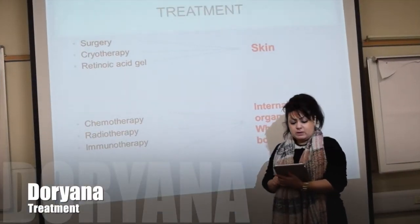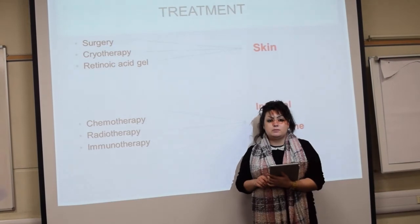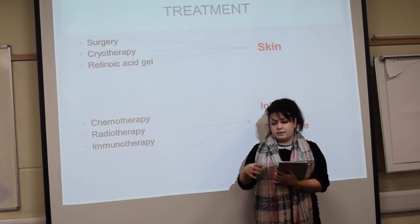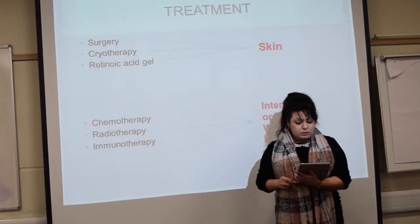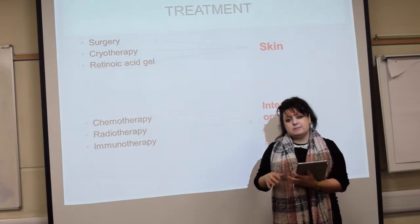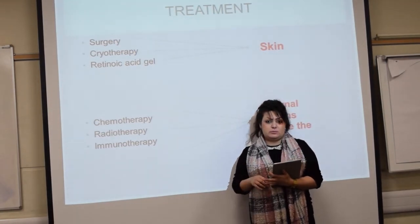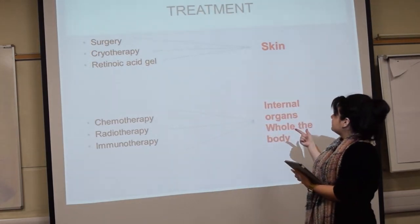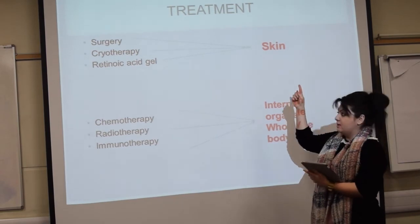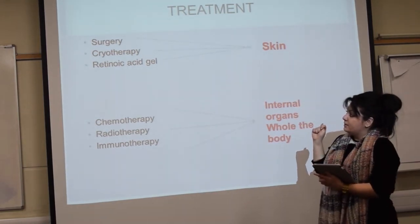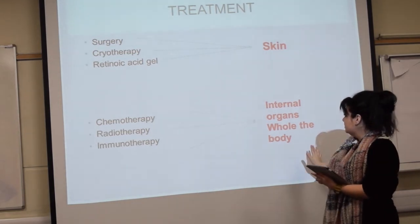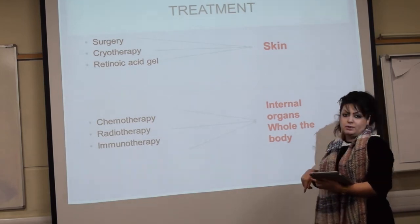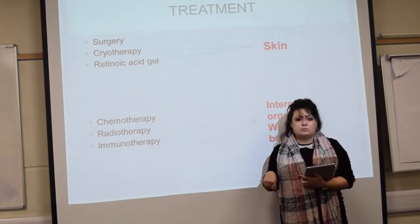Kaposi's sarcoma can be treated by different methods, depending on the type and severity of the disease. A team of specialists analyzes the symptoms and severity to determine the best treatment. For skin involvement, surgery, cryotherapy, and retinoic acid gel might be used. For internal organs or whole-body involvement, chemotherapy, radiotherapy, and immunotherapy would be done to treat the disease.